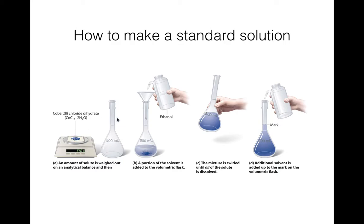There are different sizes of volumetric flasks. You put the solid in, then start filling it with your solvent — normally water, though it depends on what solution you're making. You don't fill it all the way to the line at first because it's hard to mix. You fill it partway so you can swirl and shake it to make sure all of your solute dissolves. Once it's all dissolved, carefully fill it up to that mark and you'll have the exact concentration you desire.